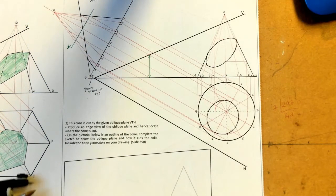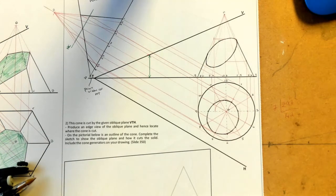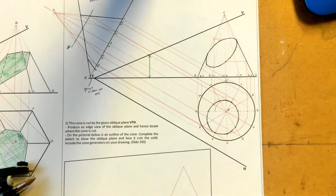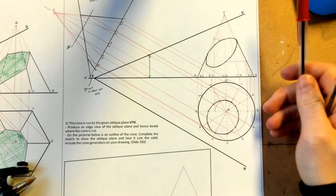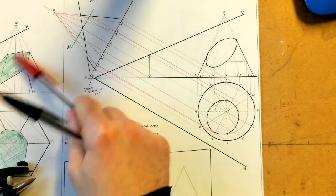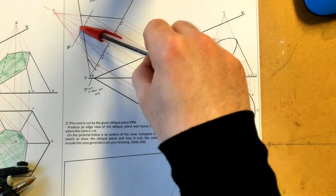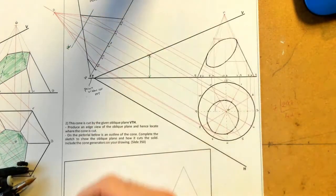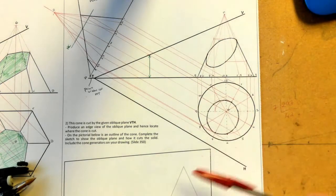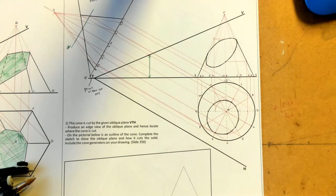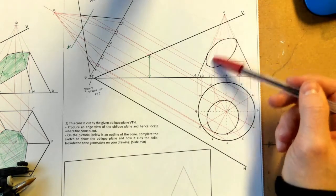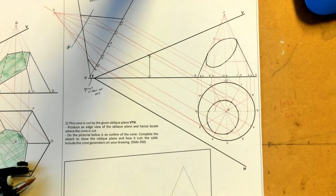That is the cone question complete. With a cone, there are no definitive edges like a hexagonal pyramid, so the generator method is needed — finding 12 points rather than just 6. Points 4 and 10 required a horizontal cut in plan, and points 6 and 12 required a similar horizontal cut in elevation. In an exam, shade in the cut surface in colour in both plan and elevation to show where the oblique plane cuts through the solid.